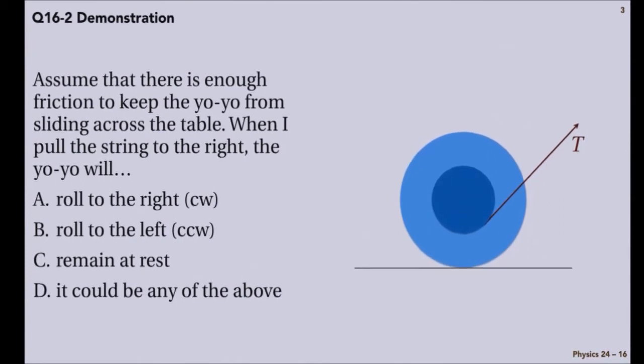Is it also about halfway? So the axle is probably about half the radius of the full disk, if that helps. OK. So what do you think? I'm going to pull up on the string, and which way will the yo-yo roll?